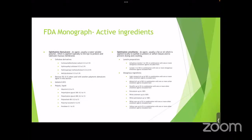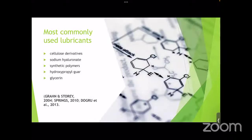Viscosity agents are included in formulations to increase contact time with the ocular surface. As per the FDA monograph, active ingredients in lubricant formulations are divided into two types: ophthalmic demulcents and ophthalmic emollients. Demulcents are water-soluble polymers applied topically to protect and lubricate mucous membranes — they include cellulose derivatives, dextrins, gelatins, and polyols. Emollients are fat or oil components applied to the eyelids to protect and soften tissues.